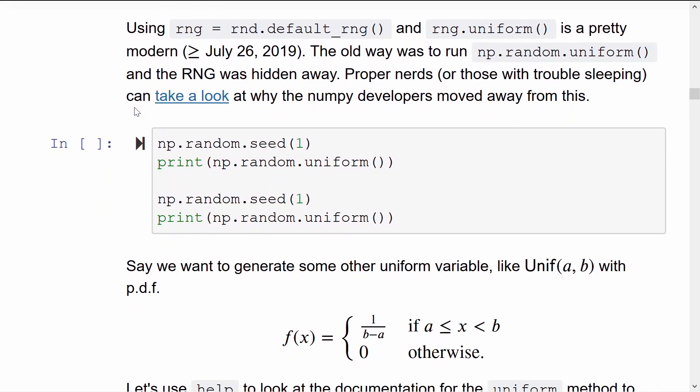The way that I'm showing you to generate these random variables is kind of new. So from July 2019, they changed the interface, they being the NumPy developers. If you look online at tutorials for Monte Carlo or other things using random numbers, they would say, for example, to use np.random.uniform.